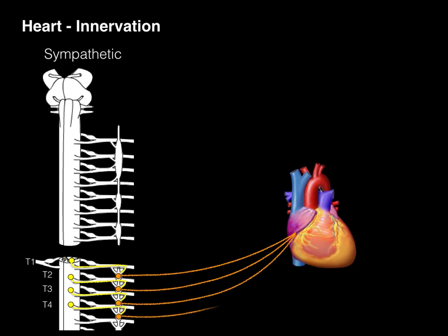We call these thoracic sympathetic cardiac nerves, also known as cardiopulmonary splanchnic nerves, and these come off right from that sympathetic chain.